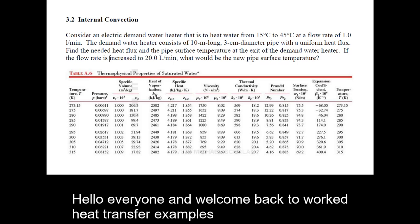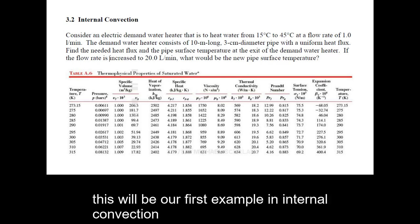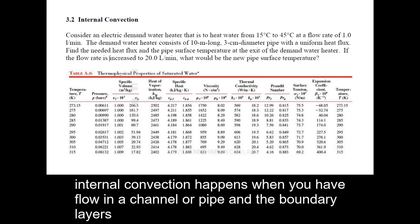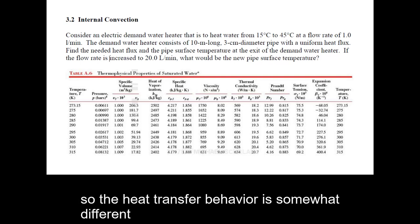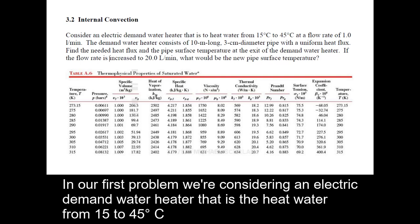Hello everyone and welcome back to Worked Heat Transfer Examples. This will be our first example in internal convection. Internal convection happens when you have flow in a channel or a pipe and the boundary layers — the thermal or the hydrodynamic boundary layers — interfere with each other, so the heat transfer behavior is somewhat different.